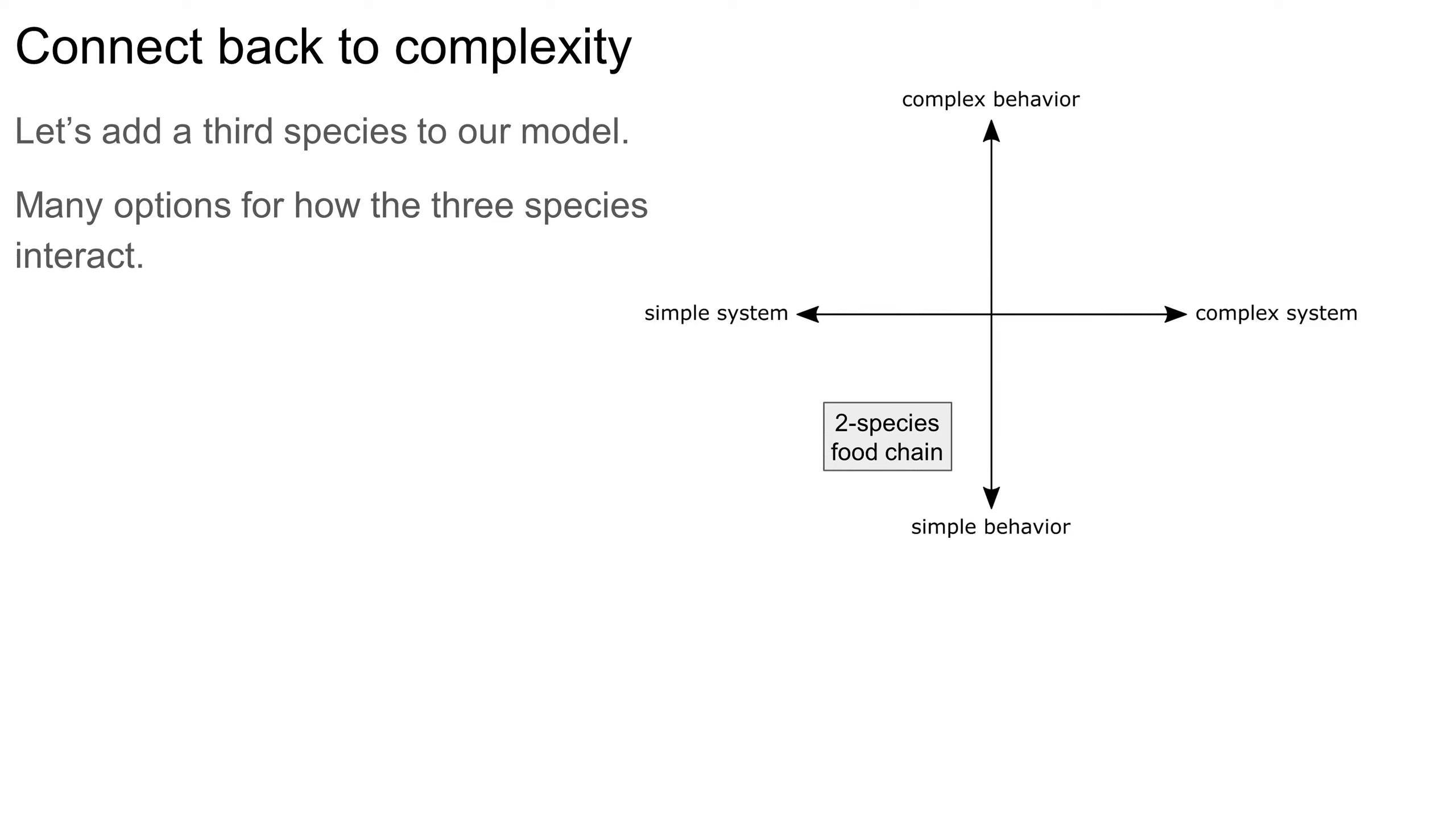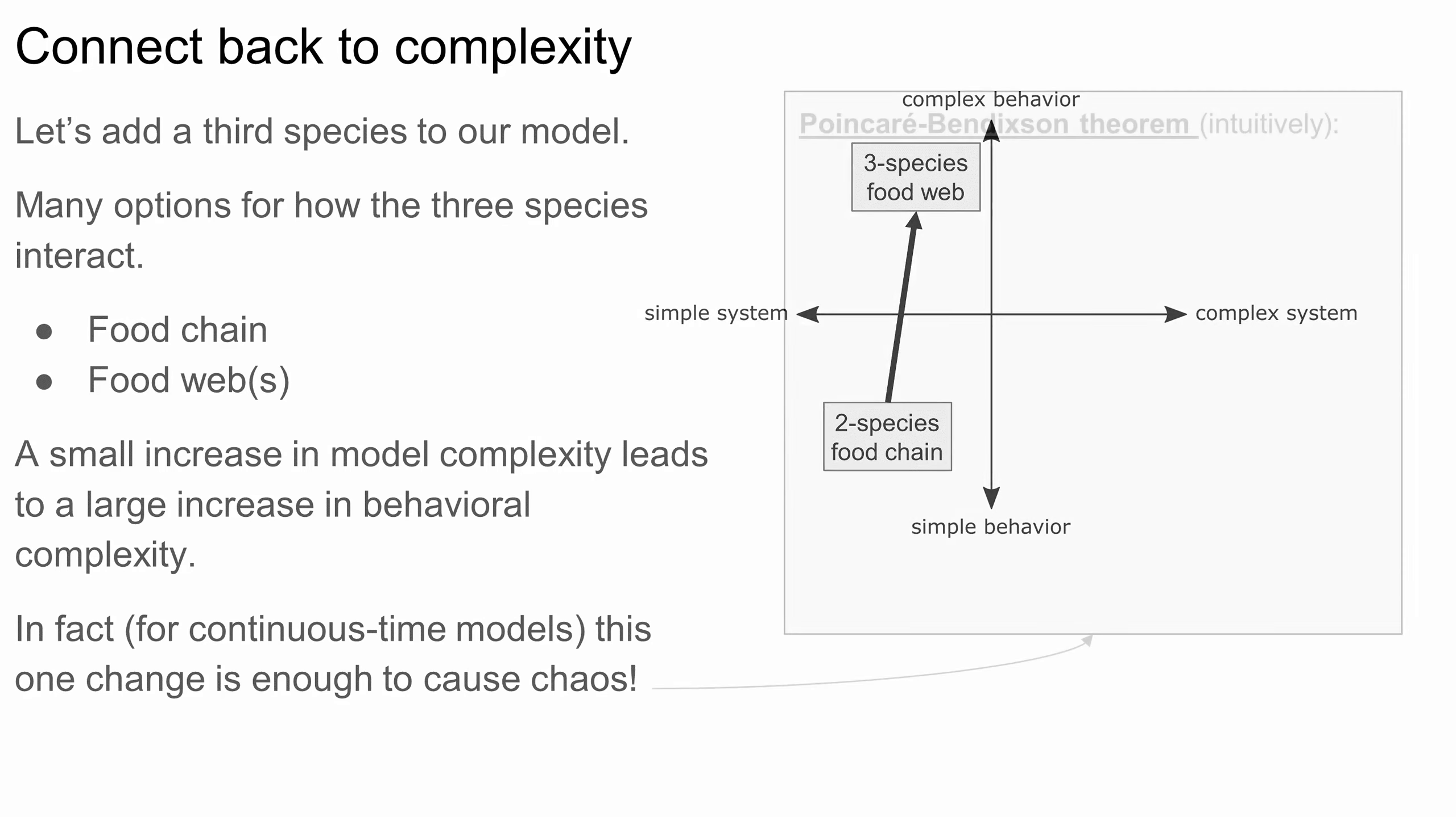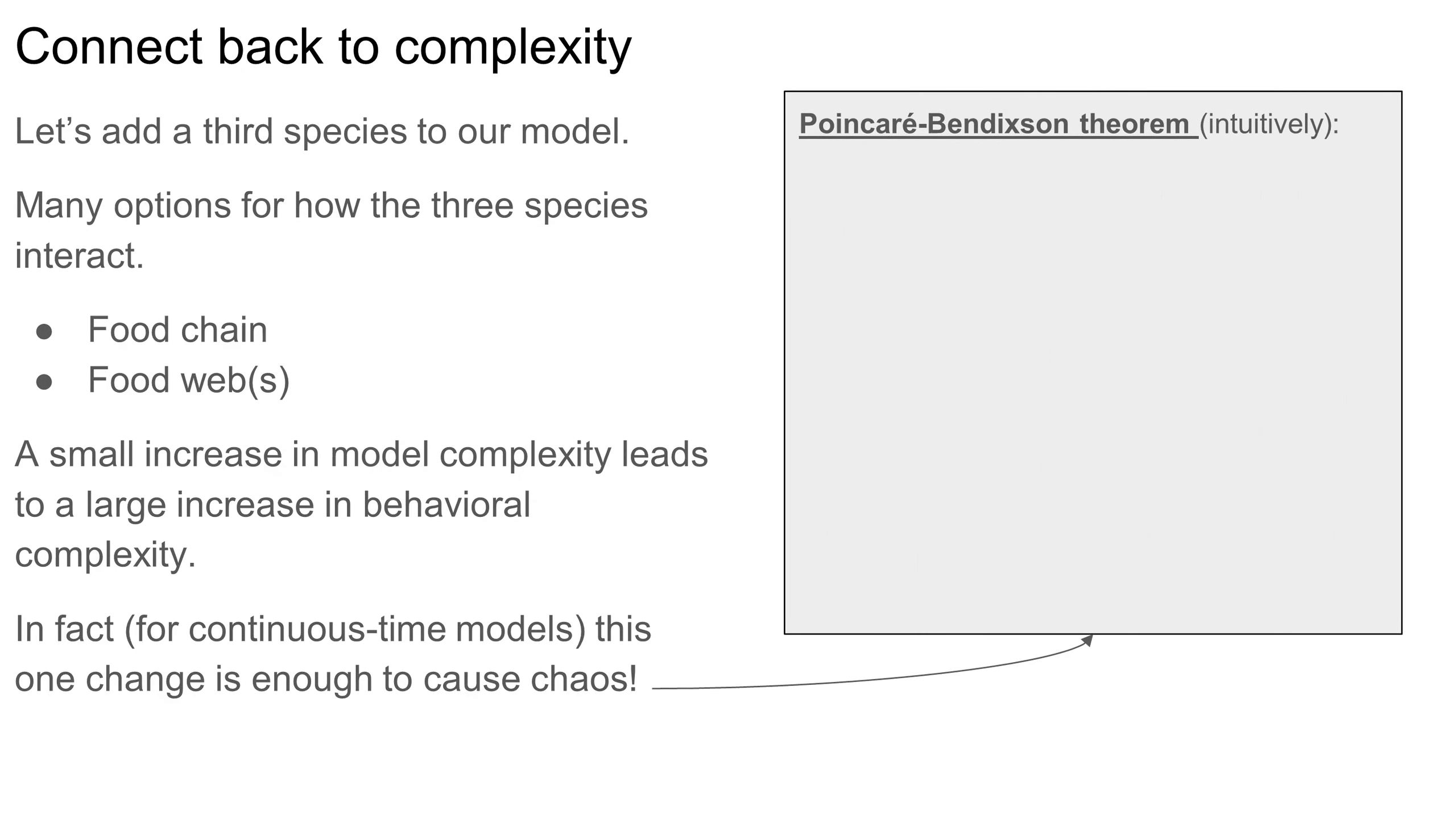When we add a third species, we have more options for how the three species interact compared to the basic two-species system. For example, we can have a food chain, where the top species preys on the middle species, which in turn preys on the bottom species. Alternatively, we could have a food web, where each species interacts directly with each other species. We'll see two different food web examples soon. In general though, the small increase in system complexity from adding a third species can lead to a disproportionately large increase in behavioral complexity. This puts our three-species system up here, in the top left quadrant. In fact, adding a third species can be enough to cause chaos in the mathematical sense we talked about earlier. There's even something called the Poincaré-Bendixson theorem that describes this phenomenon.